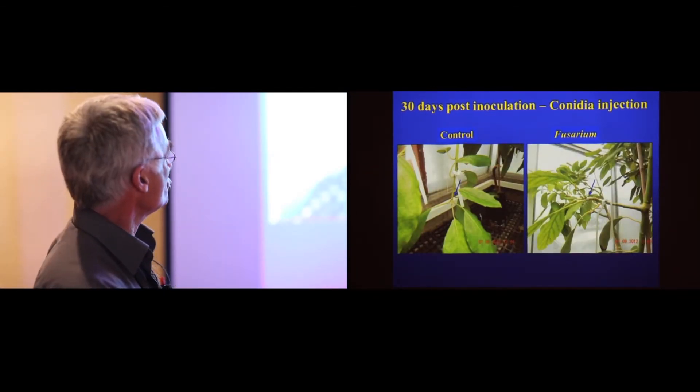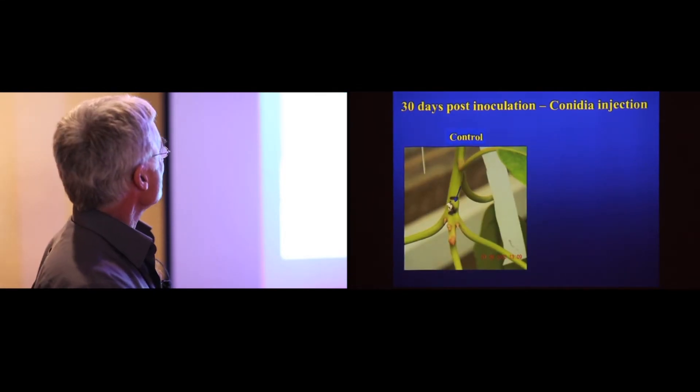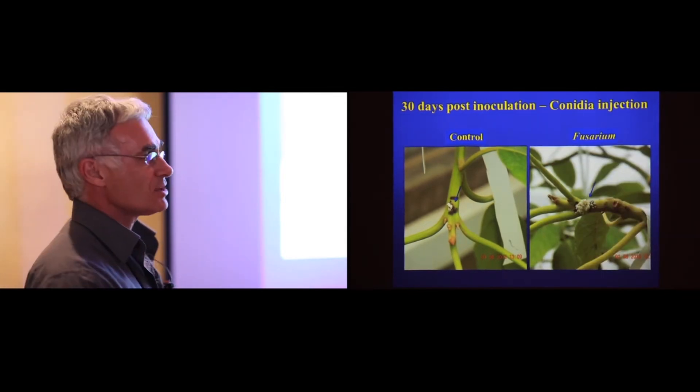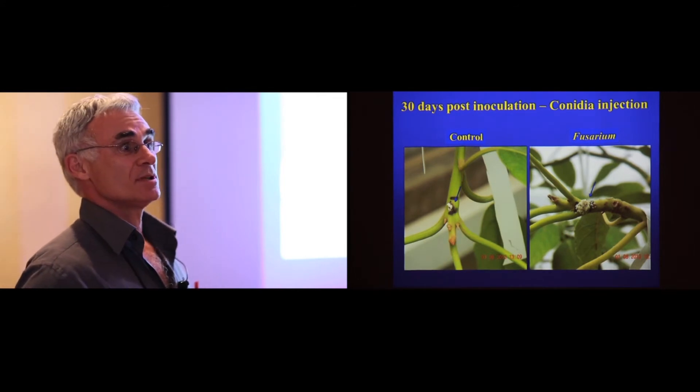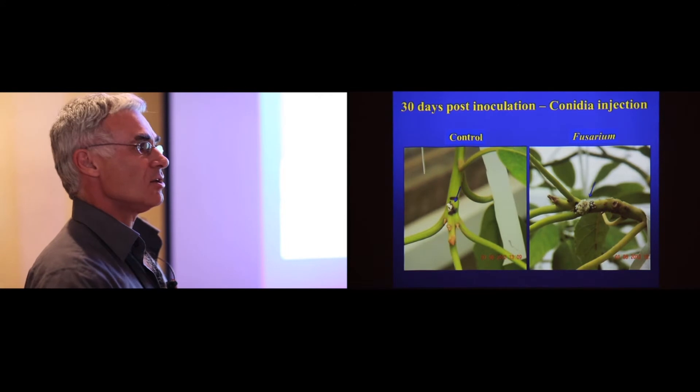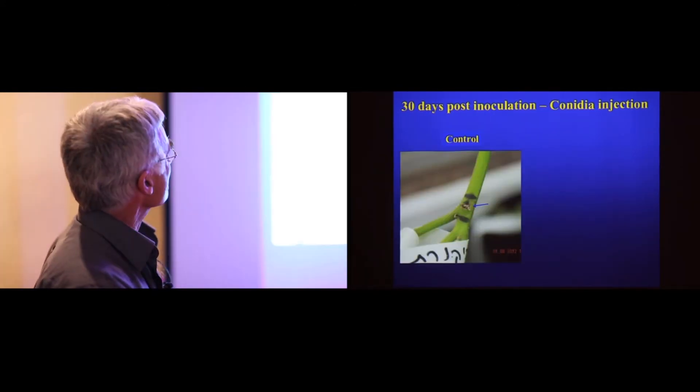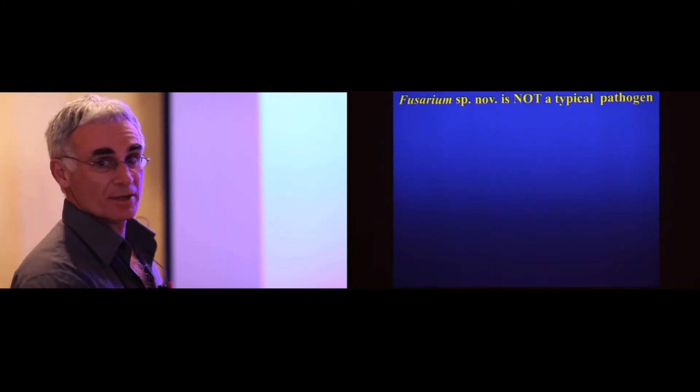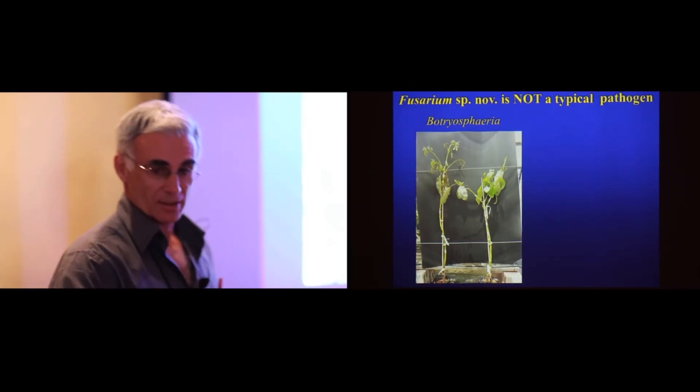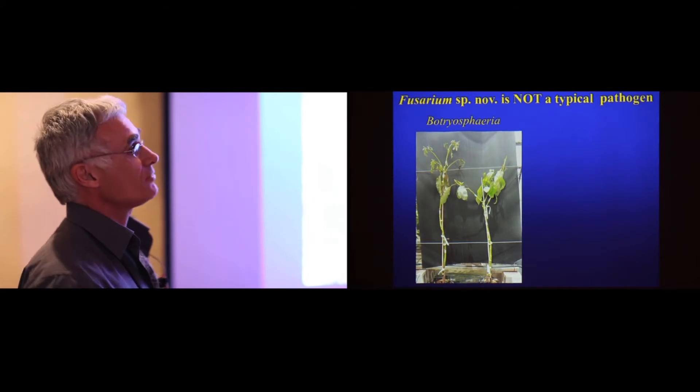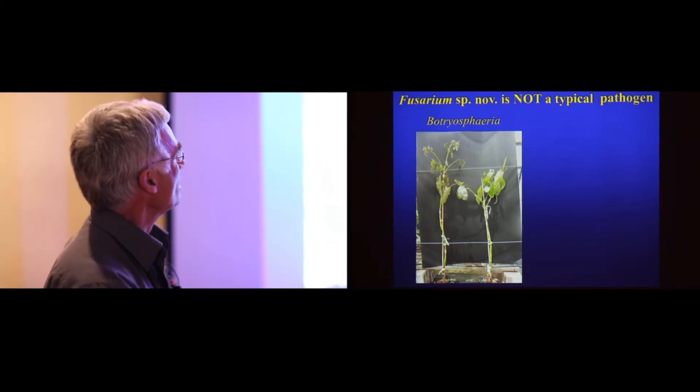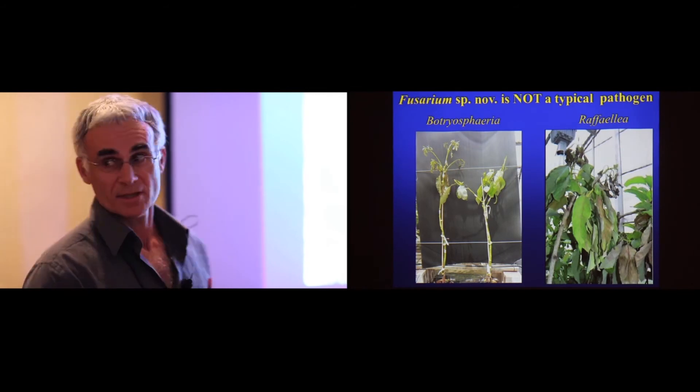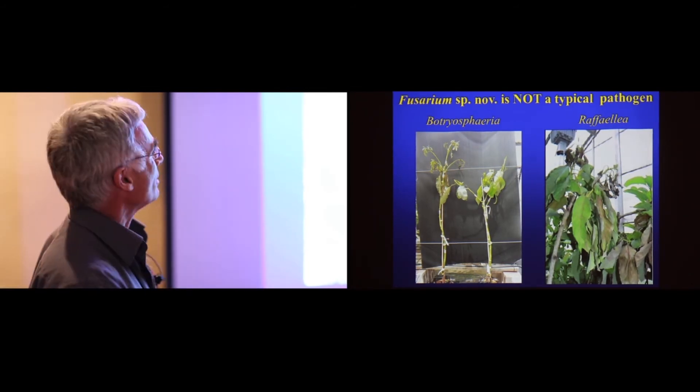Similar tests were done on shoots, vegetative shoots. Again, you see the control as opposed to the Fusarium infection. However, these shoots will remain symptomless. You will not see any wilting or any such effect of the presence of the fungus. You can also do wound inoculation with a scalpel and agar disks, and you also do not see any wilting as such. We can call our Fusarium a minor pathogen perhaps, but it's not a typical pathogen as we see with Botryosphaeria or with Rafalia, as Randy has reported in his work.